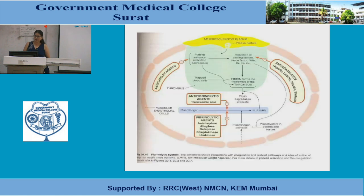A schematic representation shows antiplatelet agents acting on platelet activation, anticoagulants acting on clotting factors, and fibrinolytic and anti-fibrinolytic agents maintaining the balance in the conversion of plasminogen to plasmin at the vascular endothelium level.